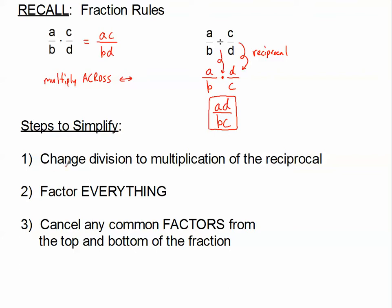Steps to simplify today: If we have any divisions, we change those to multiplication of the reciprocal. Then we factor everything that can be factored — watch out for GCFs, difference of two squares, and regular trial-and-error factors. Number three, once everything is in factored form, we cancel any common factors from the numerator and denominator. Factors are things that multiply, usually in parentheses because you've factored them.